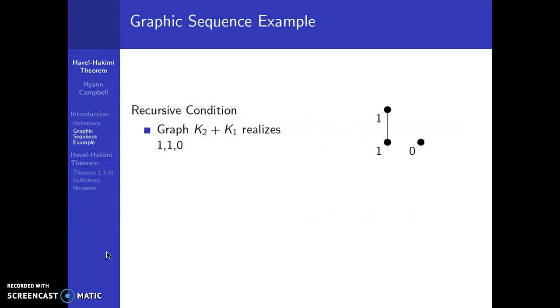And here's an example of a graphic sequence. First off, we have K1 and K2 which make our graph, and we have the degree sequence 1, 1, 0, because our first component has degrees 1 and 1 and those are the greatest numbers, and our smallest number 0 is that isolated vertex.